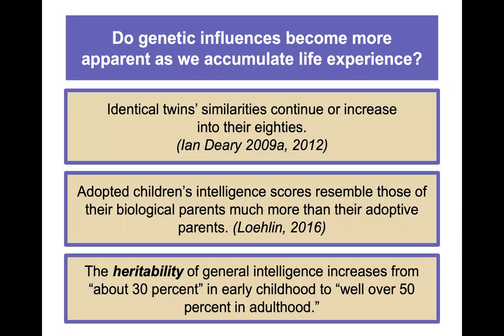Do genetic influences become more apparent as we accumulate life experiences? Identical twin similarities continue or increase all the way into their eighties. Adopted children's intelligence scores resemble those of their biological parents much more than their adoptive parents. The heritability of general intelligence increases from about 30% in early childhood to well over 50% in adulthood — which may not be what we would expect.